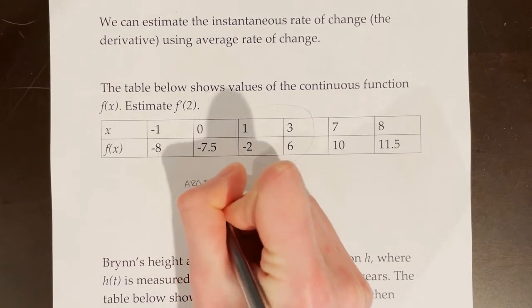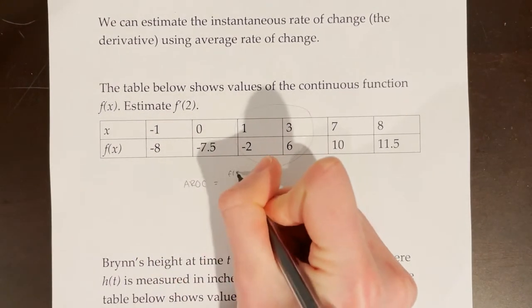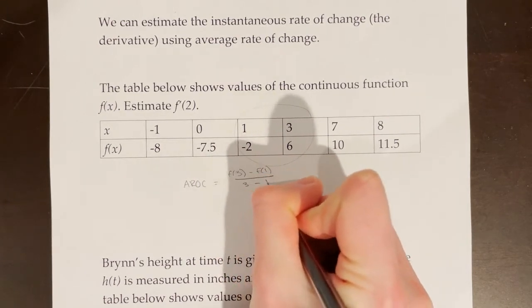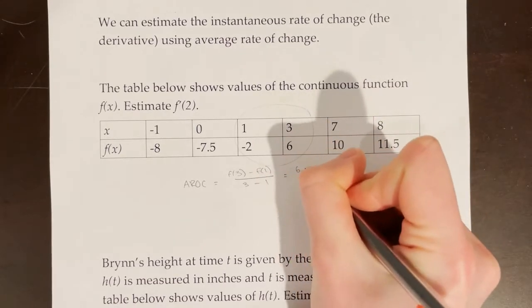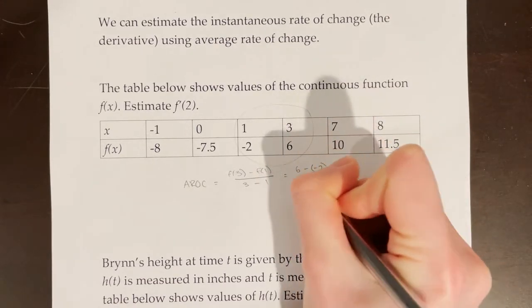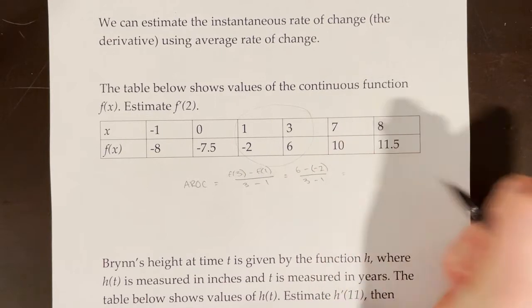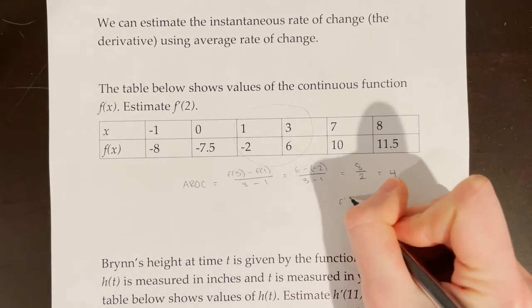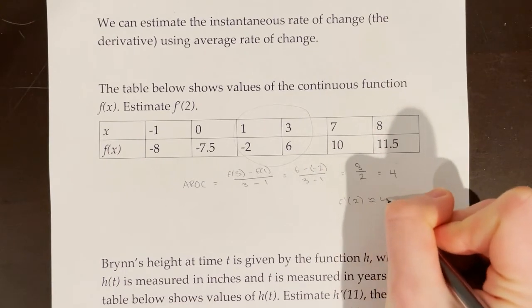So I know that the average rate of change is going to be equal to f of 3 minus f of 1, all over 3 minus 1. f of 3 is 6, and f of 1 is negative 2. And now I just simplify. So we can say that f prime of 2 is approximately 4.